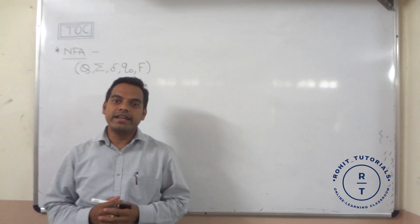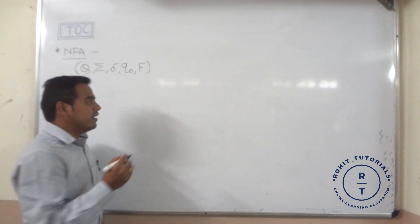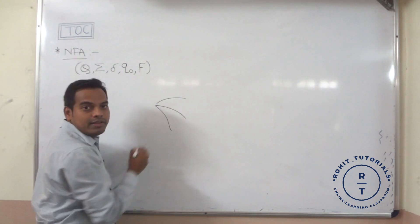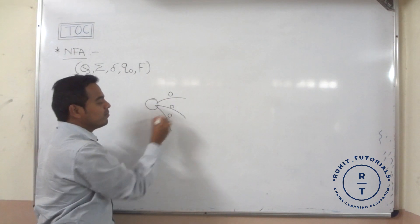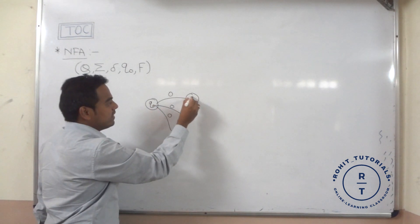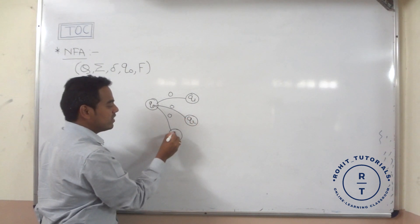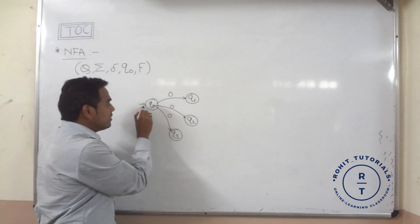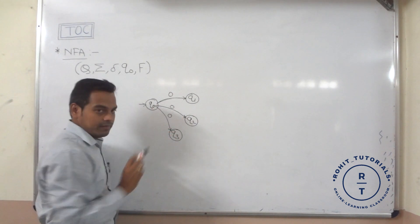Now, non-deterministic finite automata. What is meant by non-deterministic finite automata? If there are multiple transitions available from the current state for the given input symbol. If suppose q0 state is available, here q1 state is available, here q2 state is available, and here q3 state is available. From the current state, for a given input symbol, more than one transition is available.